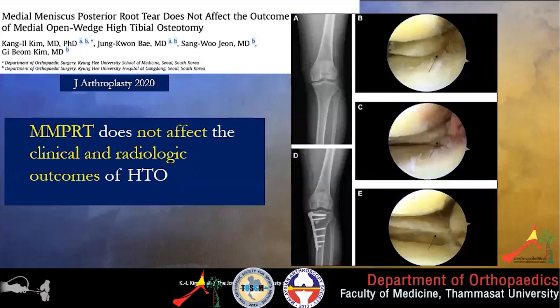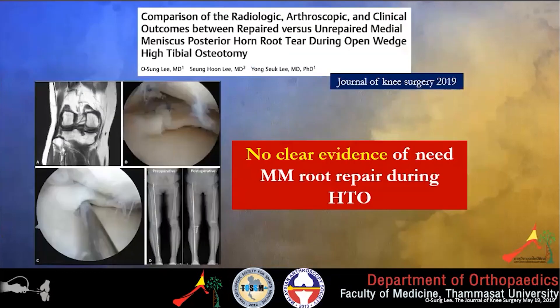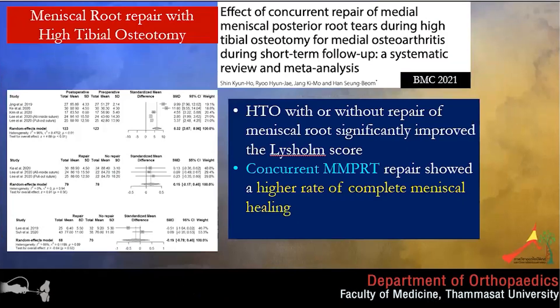The team in 2020 proposed that meniscus posterior root tear does not affect the clinical outcome of HTO compared to those without meniscus root tear over mid-term follow-up. Another study also supports the idea that root repair may not always be needed during HTO. A systematic review in 2021 showed that HTO with and without meniscus root repair both caused significant improvement in functional scores, but the group with HTO plus repair had a higher rate of meniscus root healing.